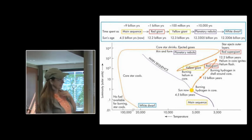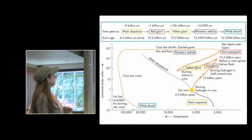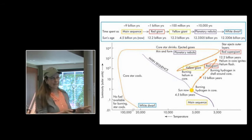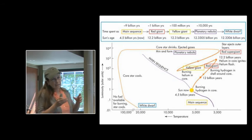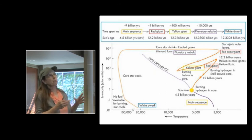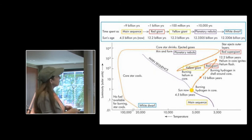You might come across this H.R. diagram. It has a good idea. It is trying to show where on the H.R. diagram the planetary nebula and the white dwarf move, but it is kind of misleading in some ways.